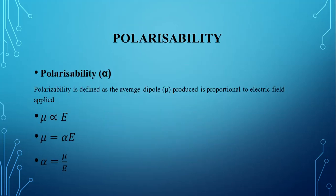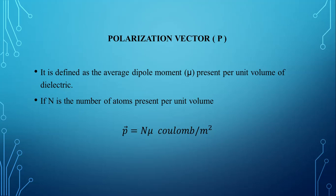Next, we are going to see about polarizability. It is denoted by the letter alpha. Polarizability is defined as the average dipole moment produced in an electric field, which is proportional to the applied electric field. The constant of proportionality is called polarizability, which is the ratio of the average dipole moment to the applied electric field. Polarization is defined as the average dipole moment per unit volume of the dielectric material. If the dielectric material consists of n atoms per unit volume, then polarization vector P is equal to n times the dipole moment. Its unit is coulomb per meter square.